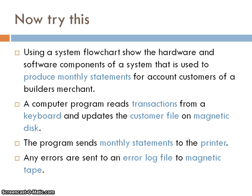Here is a typical system. It says here, using a system flowchart, show the hardware and software components of a system that is used to produce monthly statements for account customers of a builder's merchant. A computer program reads transactions from a keyboard and updates the customer file on magnetic disk. The program sends monthly statements to the printer. Any errors are sent to an error log file to magnetic tape. Just pause the video while you read that carefully again.